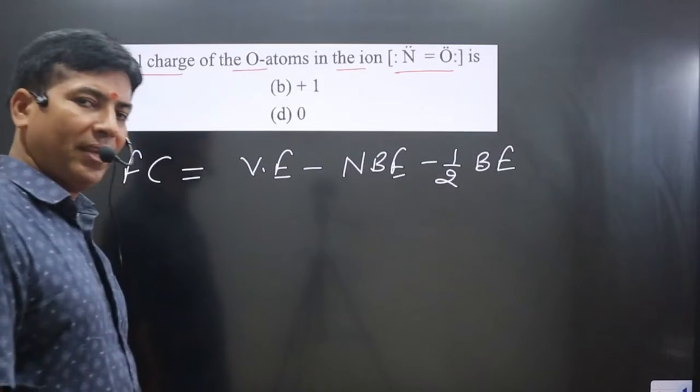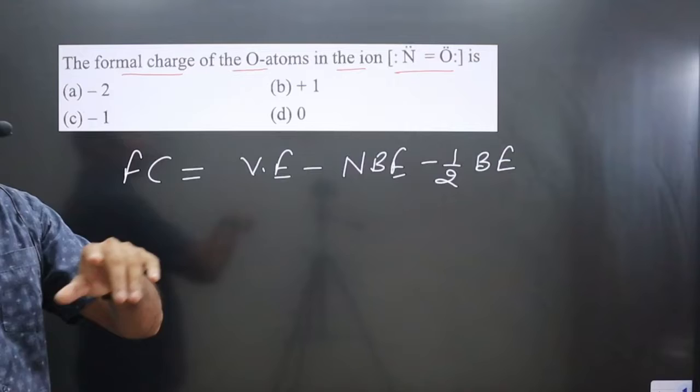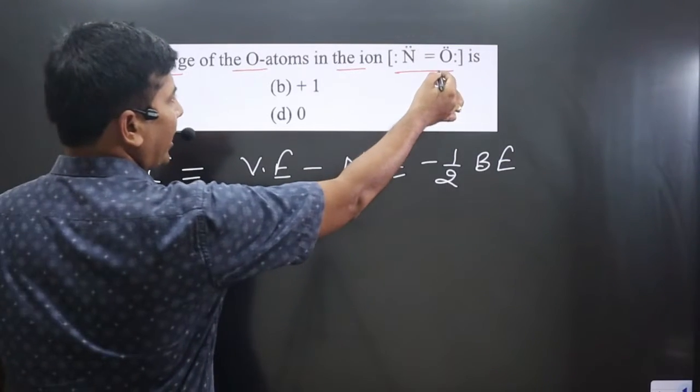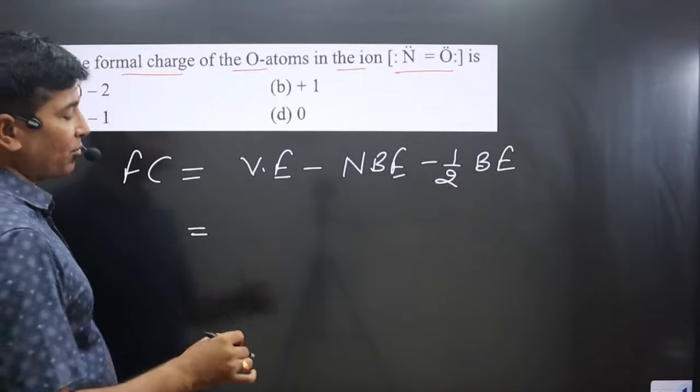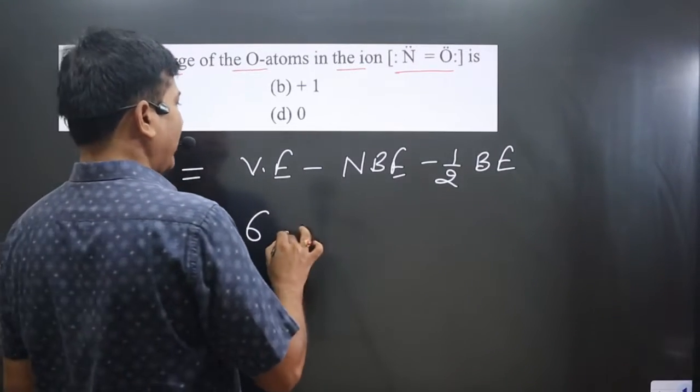This is the formula for calculating formal charge on the oxygen atom. Pay attention carefully. Oxygen has six valence electrons because it is in group 16, so we start with six valence electrons minus...